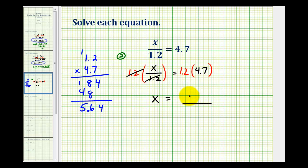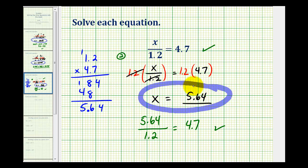So we have x equals 5.64, which means it must satisfy the original equation. So 5.64 divided by 1.2 must equal 4.7. And again, I've already verified this does check, but I would encourage you to verify it yourself. Our solution is x equals 5.64, or 5 and 64 hundredths.